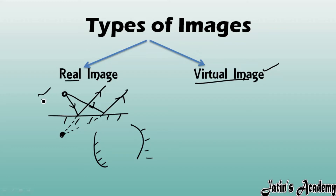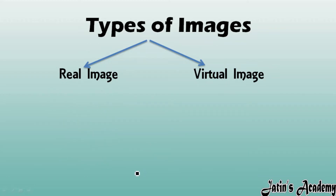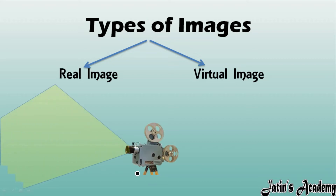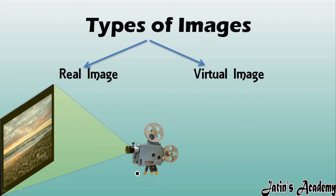I will show you one example from daily life where real and virtual images are formed. Real images are always formed in cinema halls. Whenever we go to a cinema hall, the cinema hall screen is showing us a real image — all the reflected light rays are meeting on the screen only, not behind the screen.